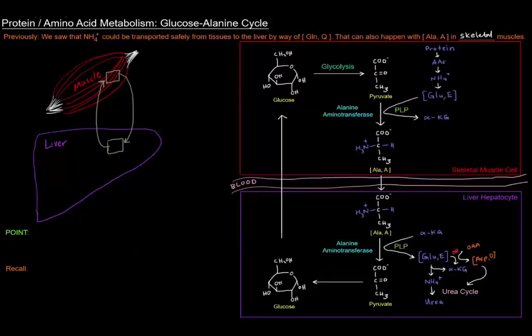Once we get that pyruvate, that pyruvate will undergo a transamination reaction catalyzed by alanine aminotransferase. And the reason it's named alanine aminotransferase is because it's going to turn that pyruvate into alanine. Because alanine is the alpha amino acid counterpart to pyruvate being an alpha keto acid.